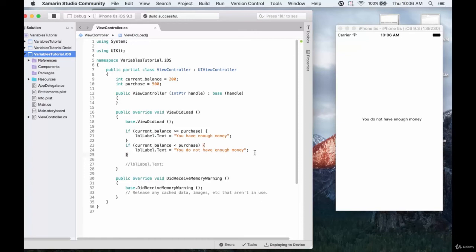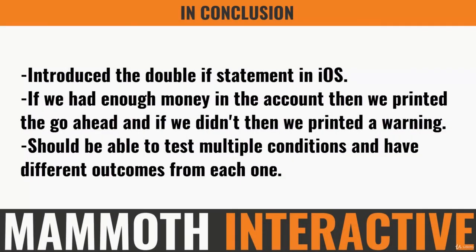Next time we'll look at how we can set this up so that it only tests one of two conditions. In this part of the tutorial, we introduced a double if statement in iOS — one if statement right after another. We did this using a check balance example, printing a go-ahead if we had enough money and a warning if we didn't. This covered two different conditions — balance greater than or equal to purchase, or less than purchase — with a different outcome for each. By now, you should be able to test multiple conditions and have a different outcome for each one.